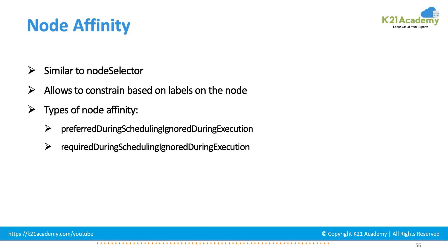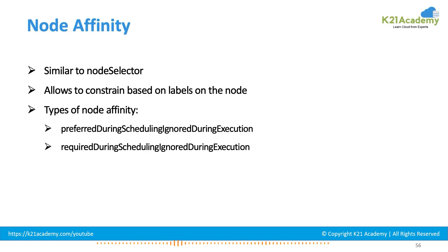One is preferred during scheduling and the other is required during scheduling. The preferred type is a soft rule — you prefer the condition to be matched, but if it is not matched, that is still okay. The scheduler will first try its best to match the condition, but if the constraint is not matching, your pod will not go to pending state — it will go to a non-preferable node instead.